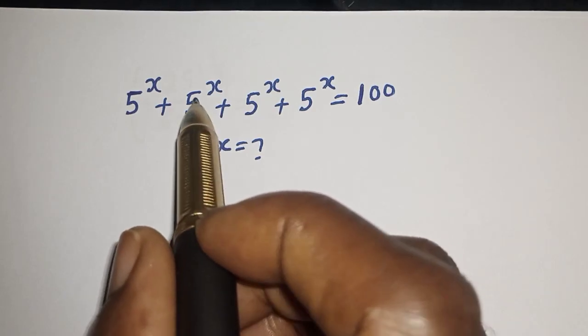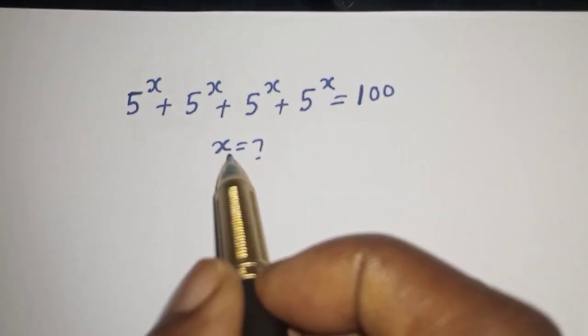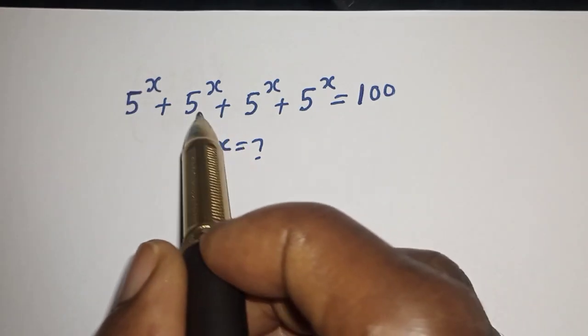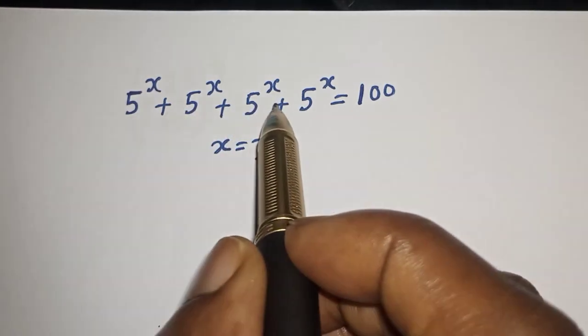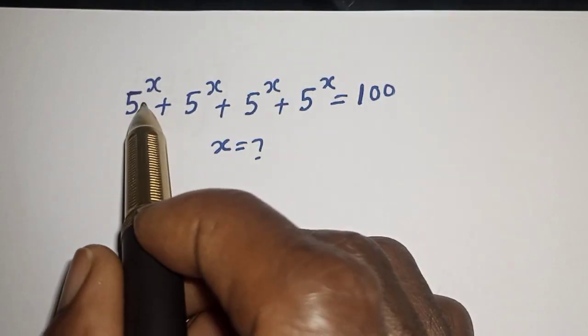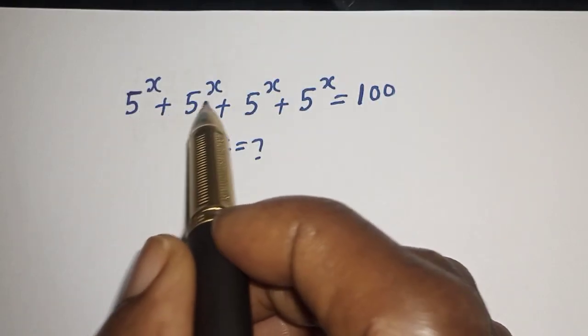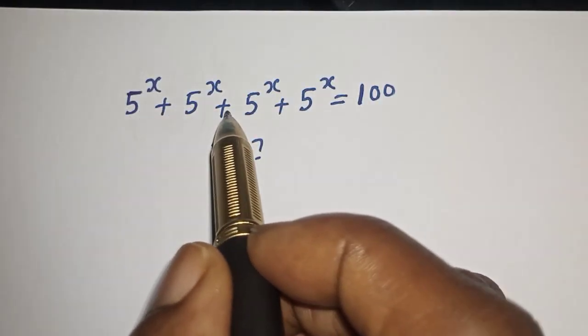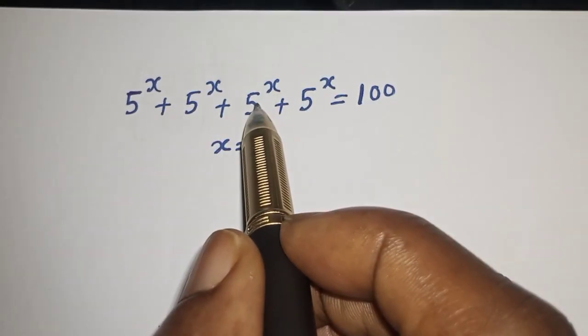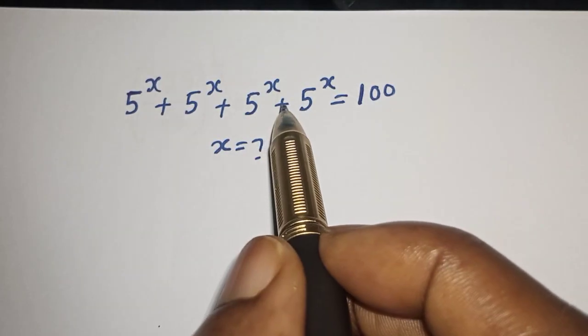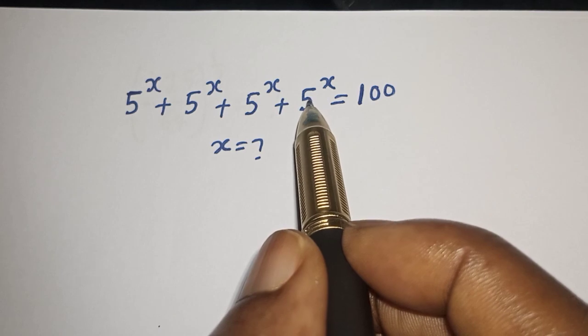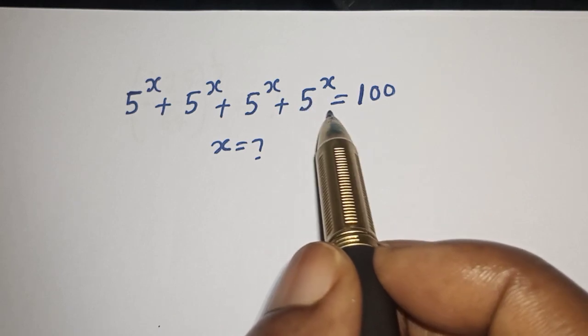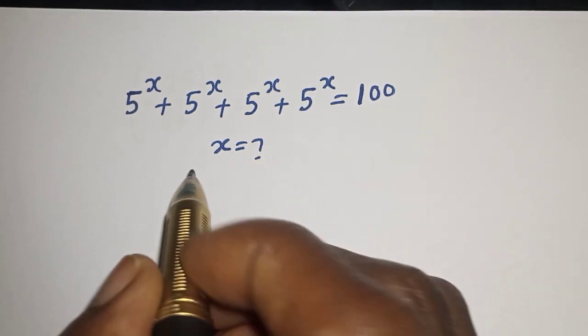Hello, welcome to Magis. In this class, I want to find the value of s from this given equation: 5 raised to power s plus 5 raised to power s plus 5 raised to power s plus 5 raised to power s is equal to 100.